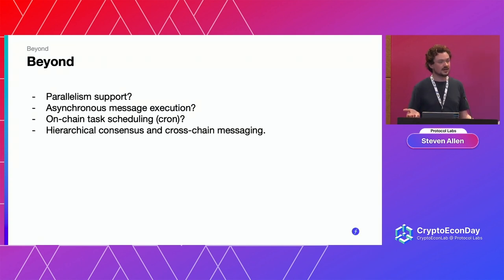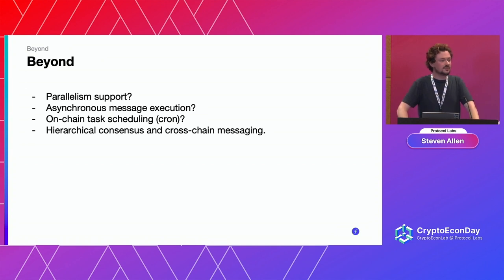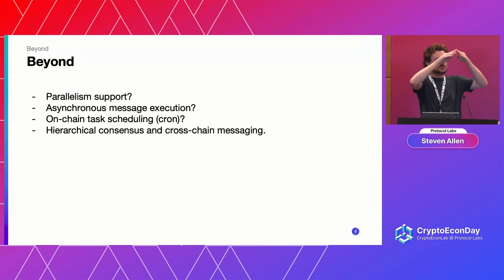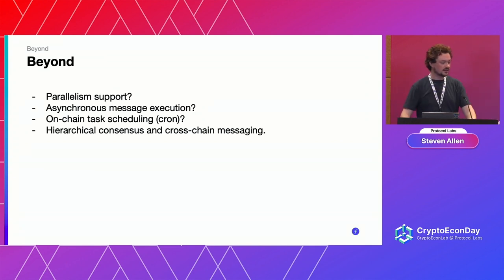Finally, hierarchical consensus — another project Protocol Labs is working on to bring basically chain sharding. This is still in its early stages, but the FVM enables this by allowing you to plug in other blockchains using custom smart contracts. A smart contract will govern a sub-blockchain, and in that blockchain a smart contract can govern another sub-blockchain, so you can build these trees of chains. And that's it for me on the technical side.